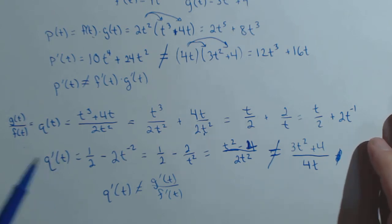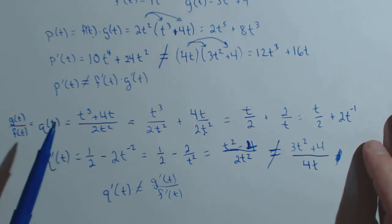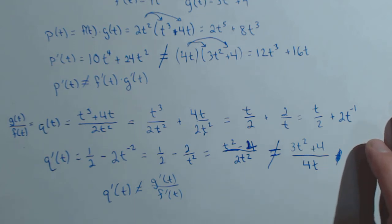Again, what this video shows is that we need a special rule when we have a product of two functions or a quotient of two functions. So those are respectively known as the product rule and the quotient rule.